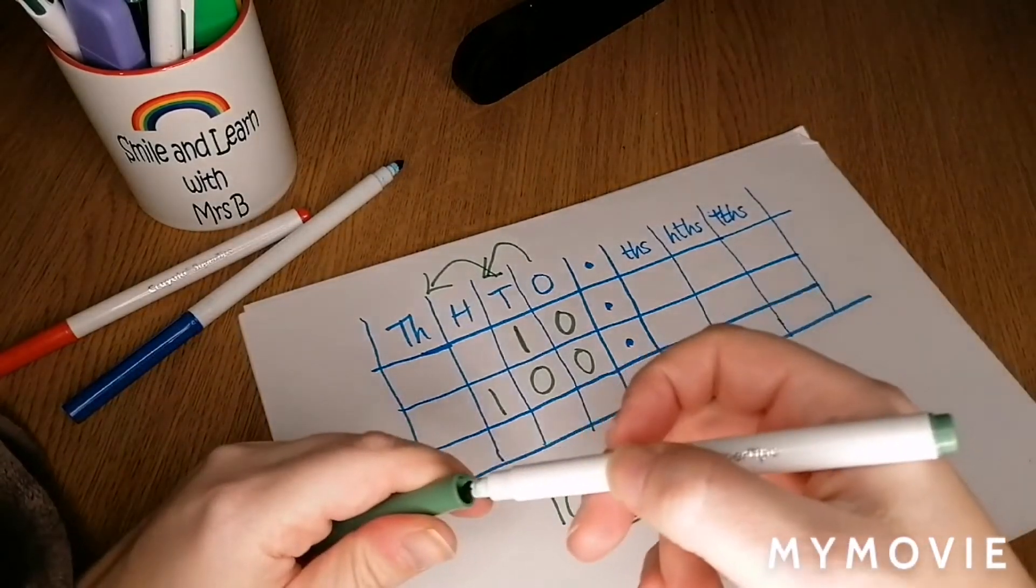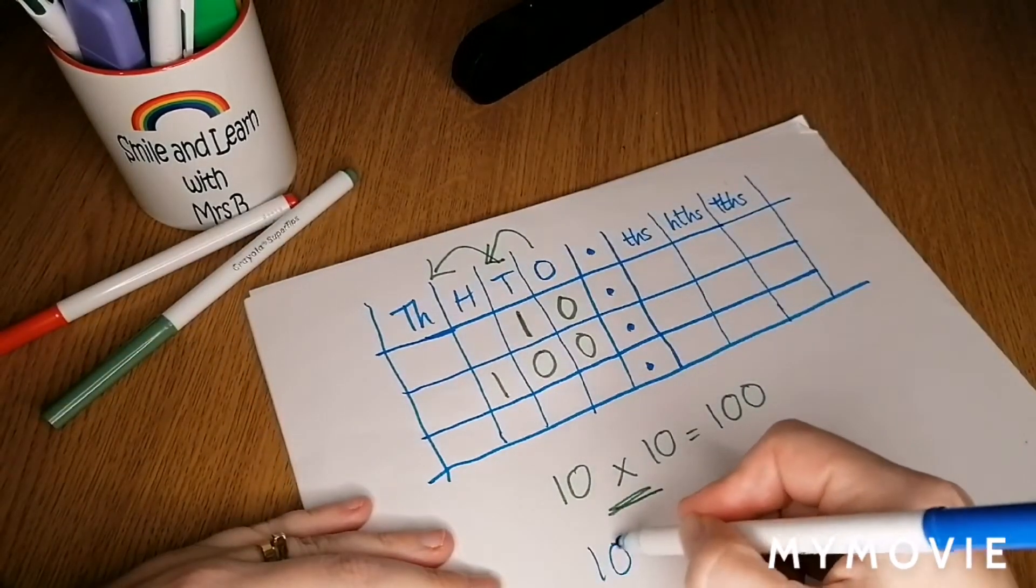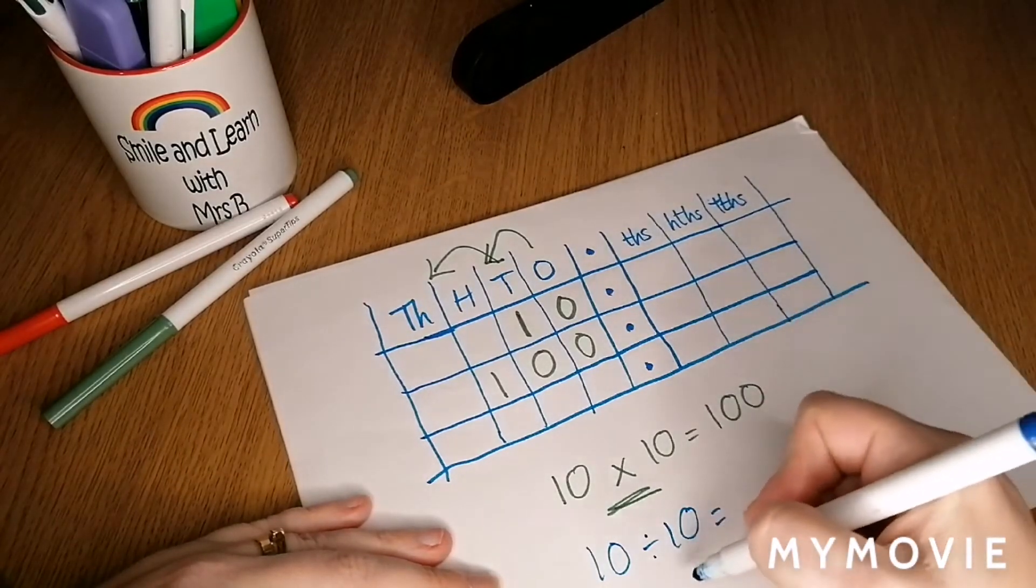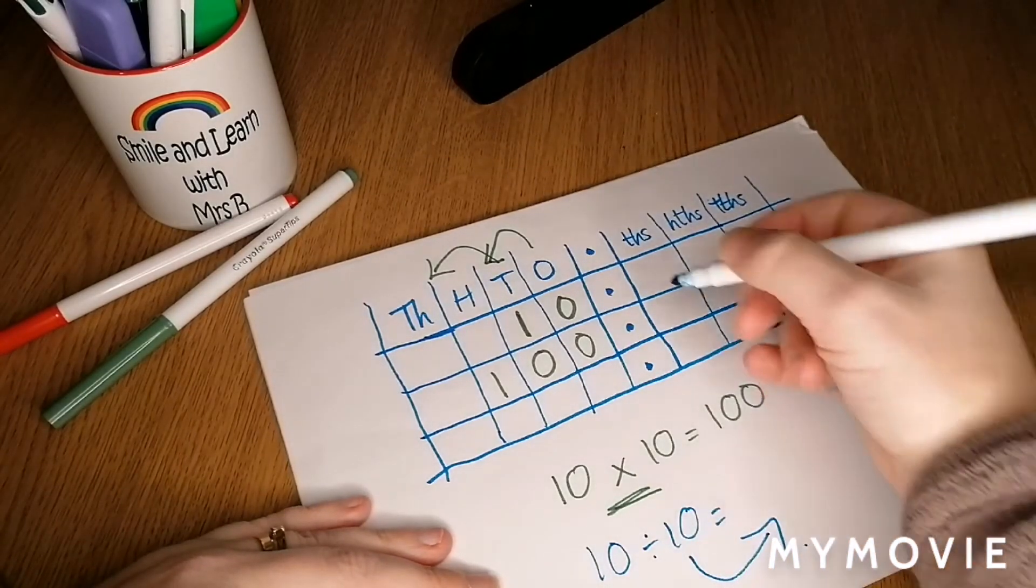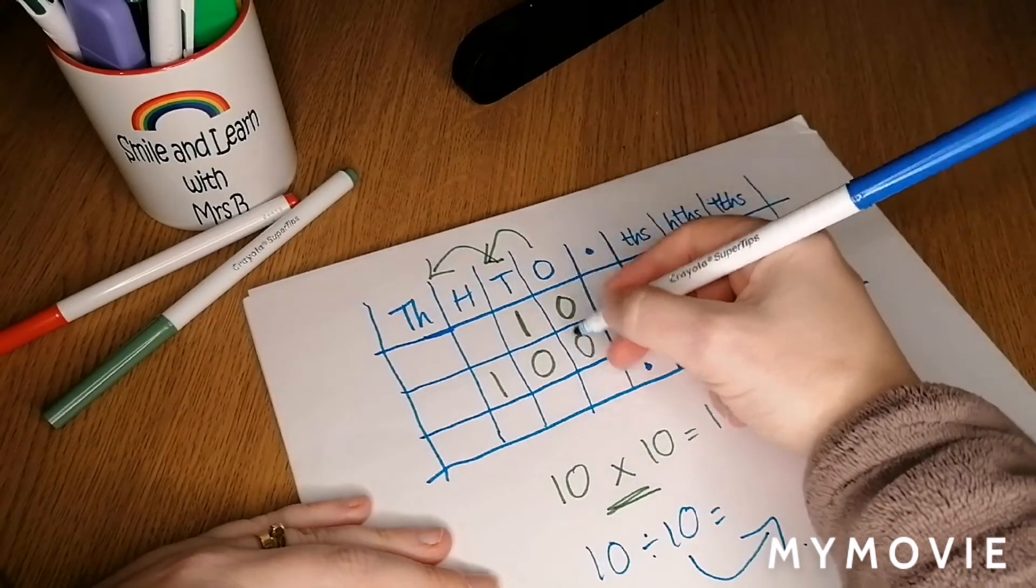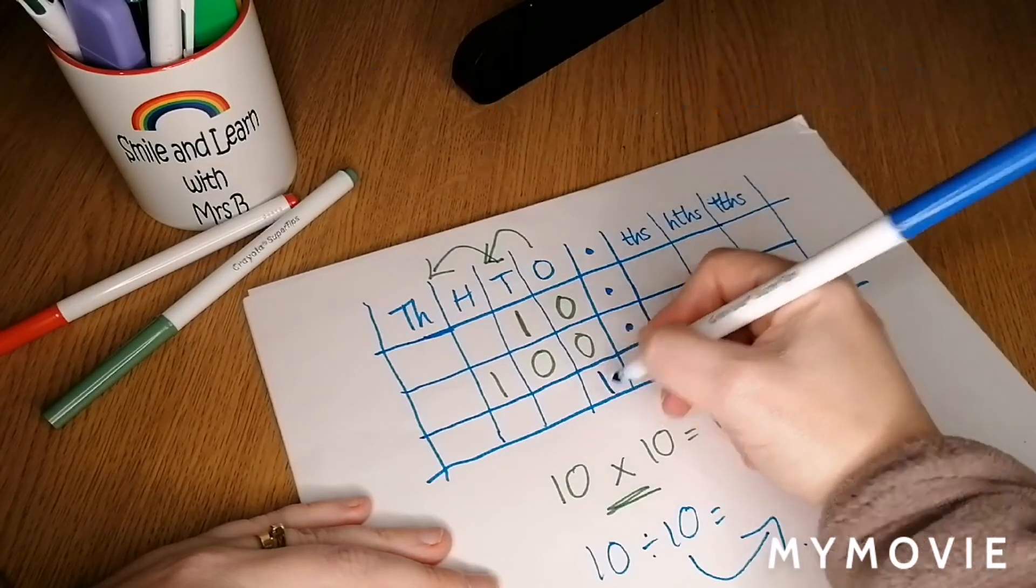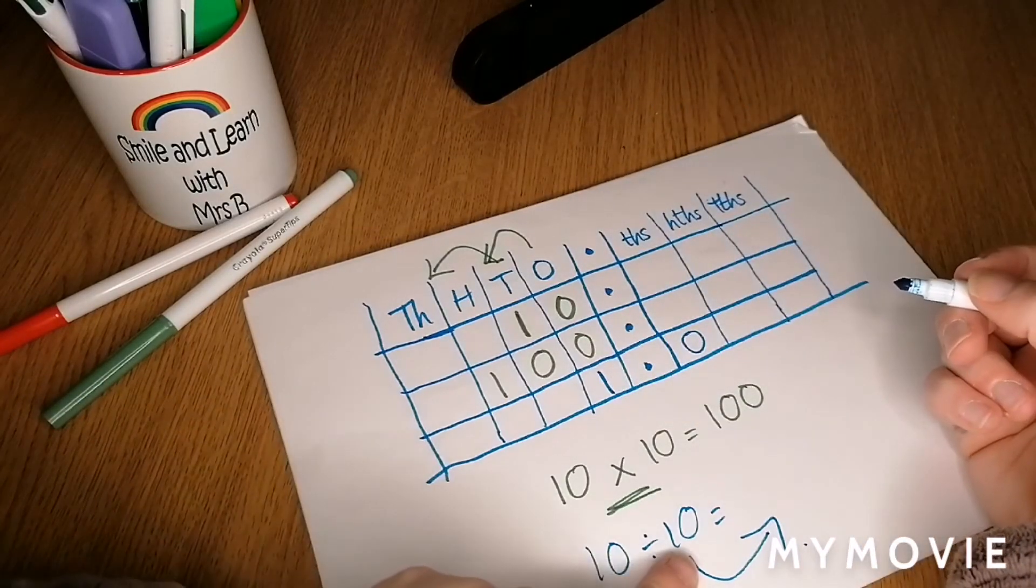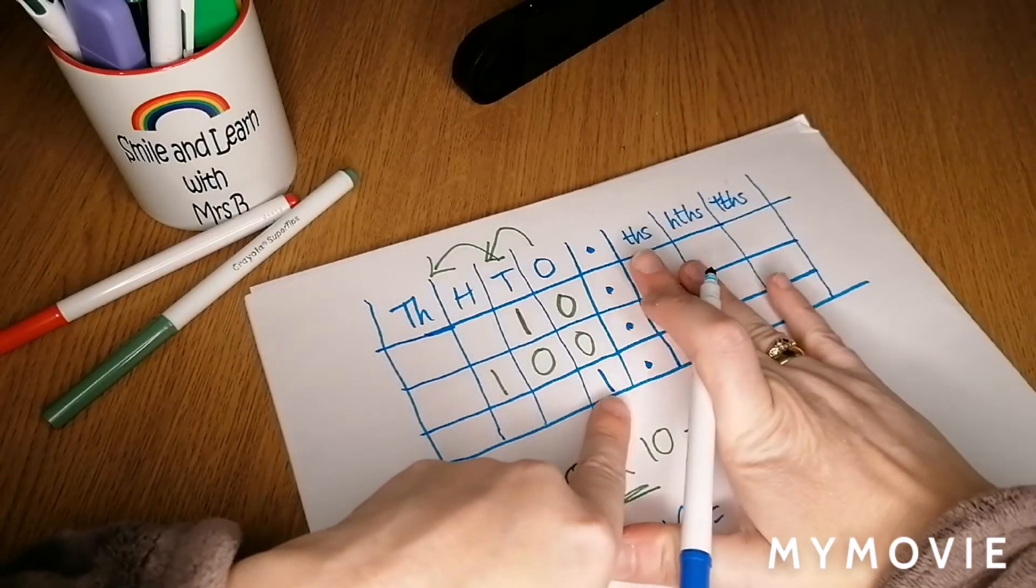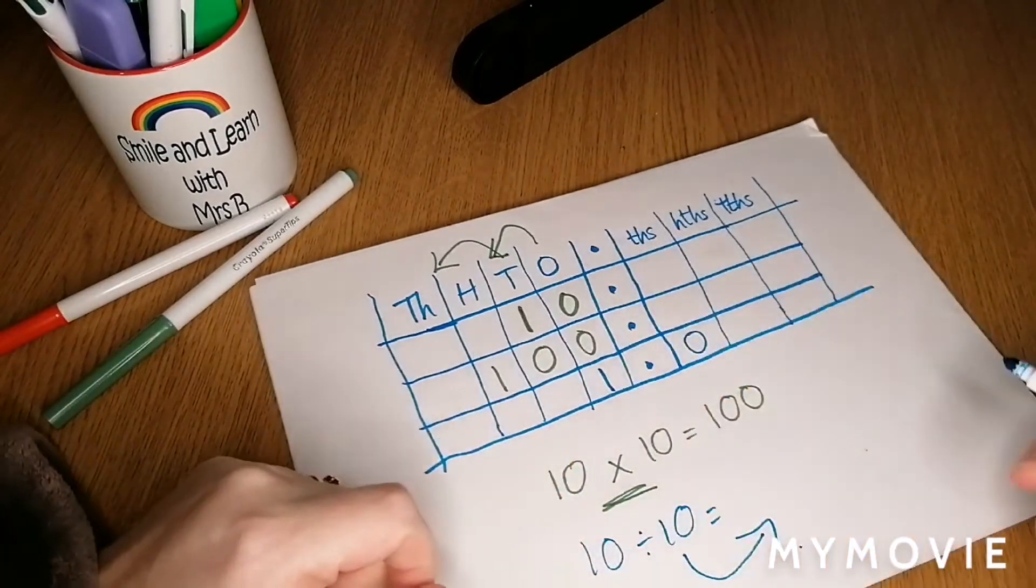When we divide, guess what happens? The numbers move to the right. So divide 10 by 10, moves one place this way. We're going to go: 10, the zero belongs here and the one belongs here. 10 divided by 10 is 1. We don't need that zero because one is represented by itself, but what it's showing is that place value—how those digits have moved left for multiplication and right for division.